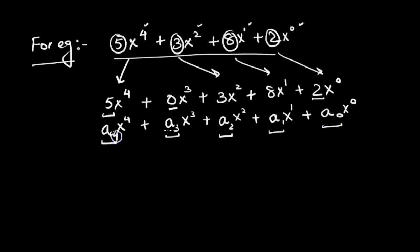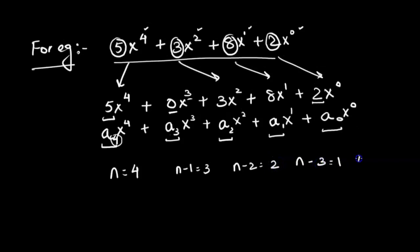So if n is 4, then n-1 is 3, n-2 is 2, n-3 is 1, and n-4 is 0. This is the general notation of a polynomial function. The two key things to remember: the 'a' constants can be any real number, and the powers of x can only be whole numbers.